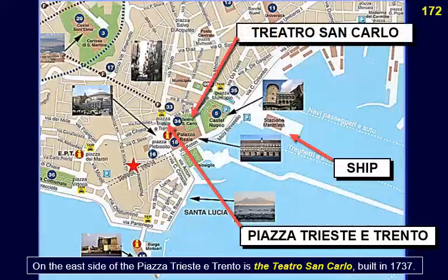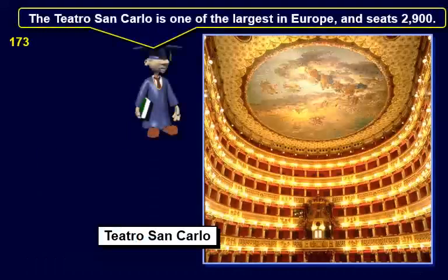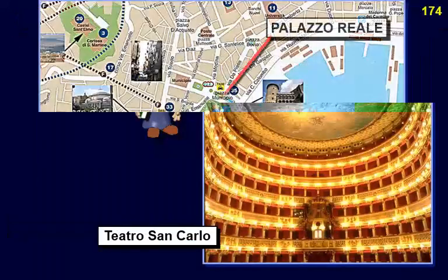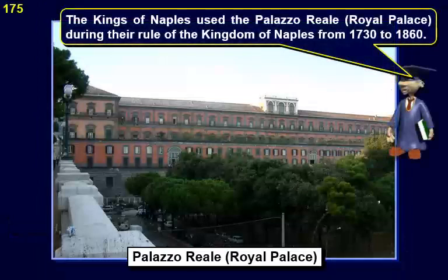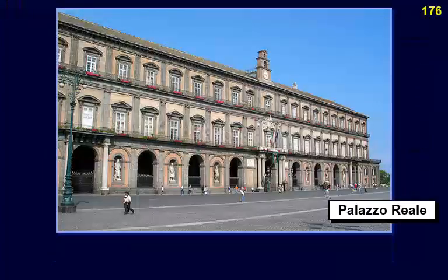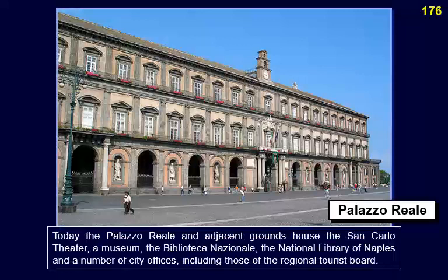This is the Piazza Trieste e Trento, the main square in Naples. On the east side of the piazza is the Teatro San Carlo, built in 1737 — one of the largest in Europe, seating 2,900. Nearby is the Palazzo Reale di Napoli, the former royal palace started in 1600 and restored from 1837 to 1840. The Bourbon kings of Naples used the Palazzo Reale during their rule of the Kingdom of Naples from 1730 to 1860. Today the Palazzo Reale houses the San Carlo Theater, a museum, the Biblioteca Nazionale, and a number of city offices.